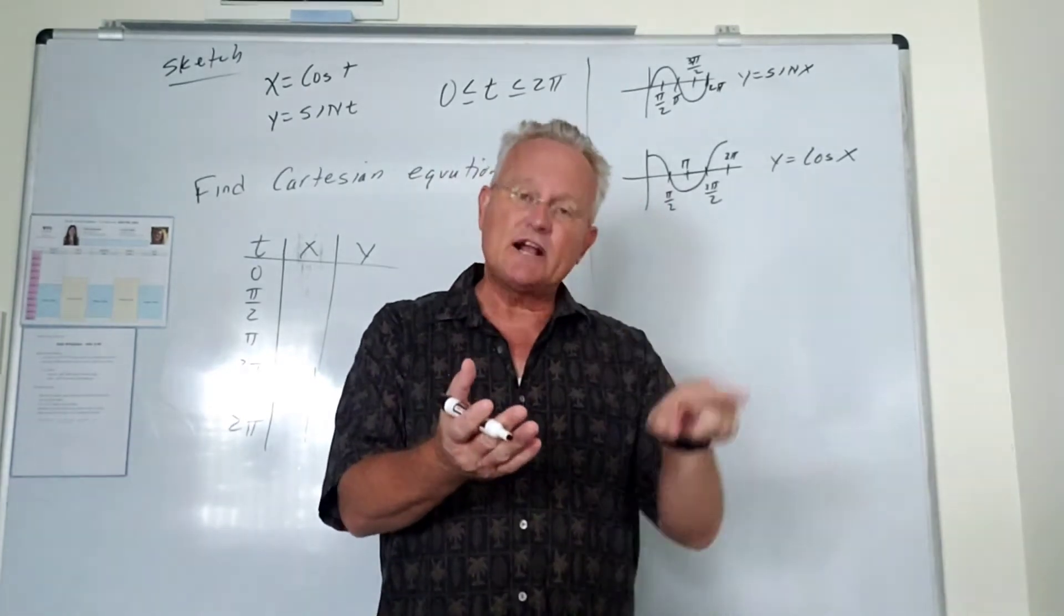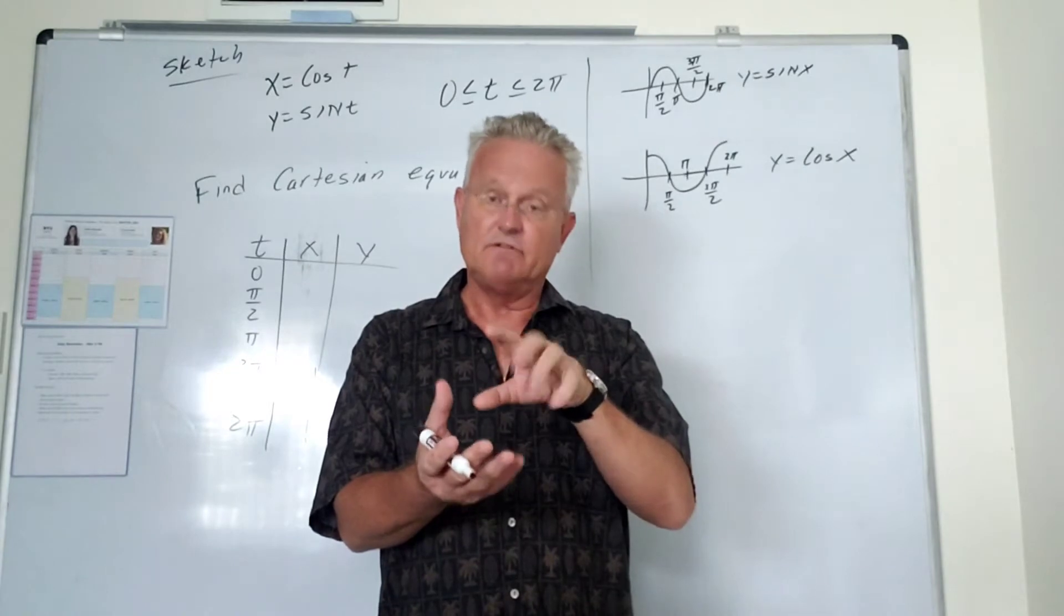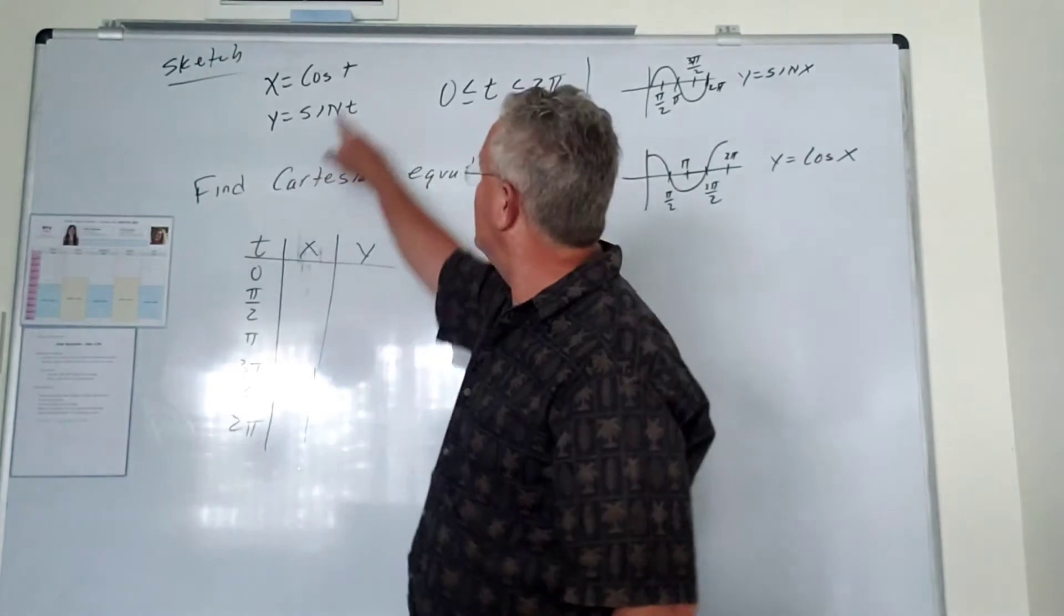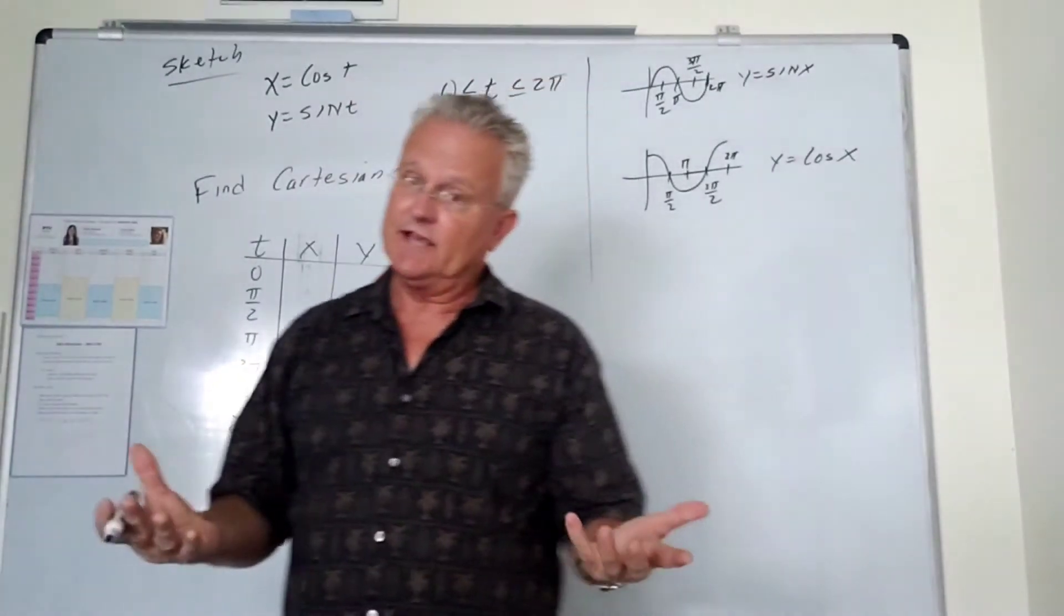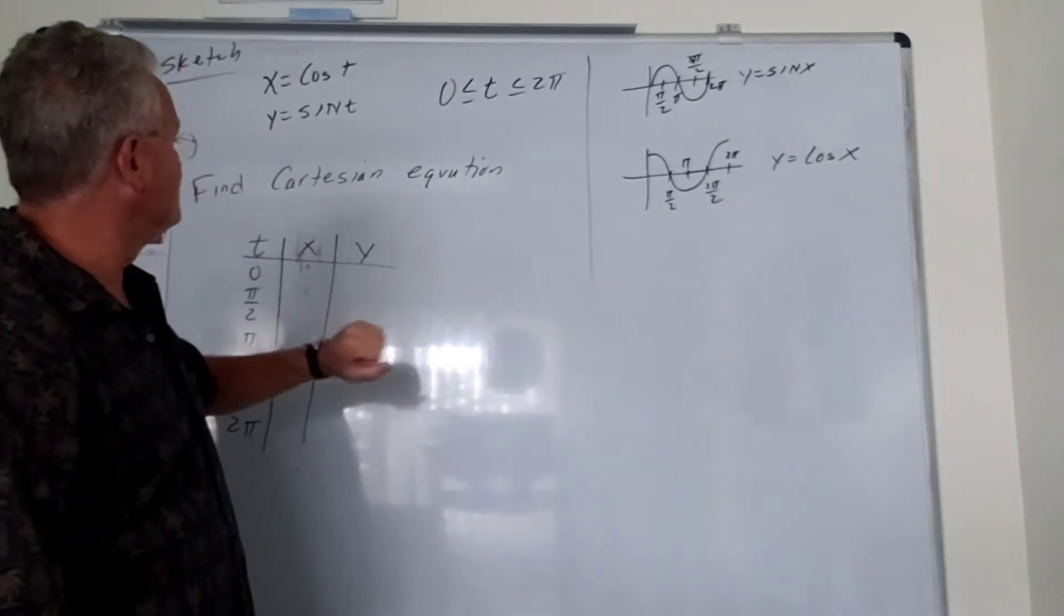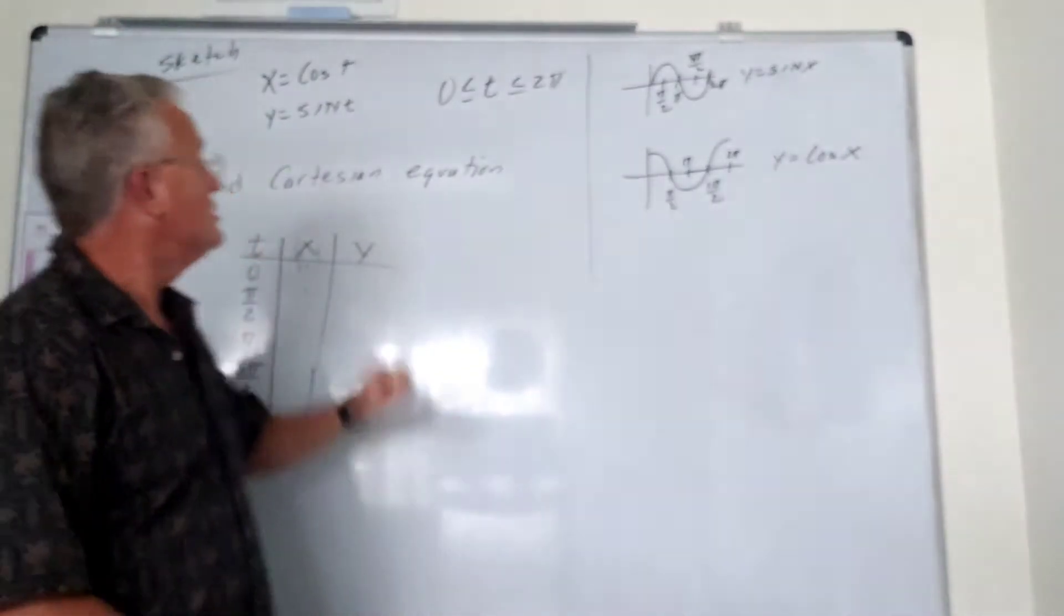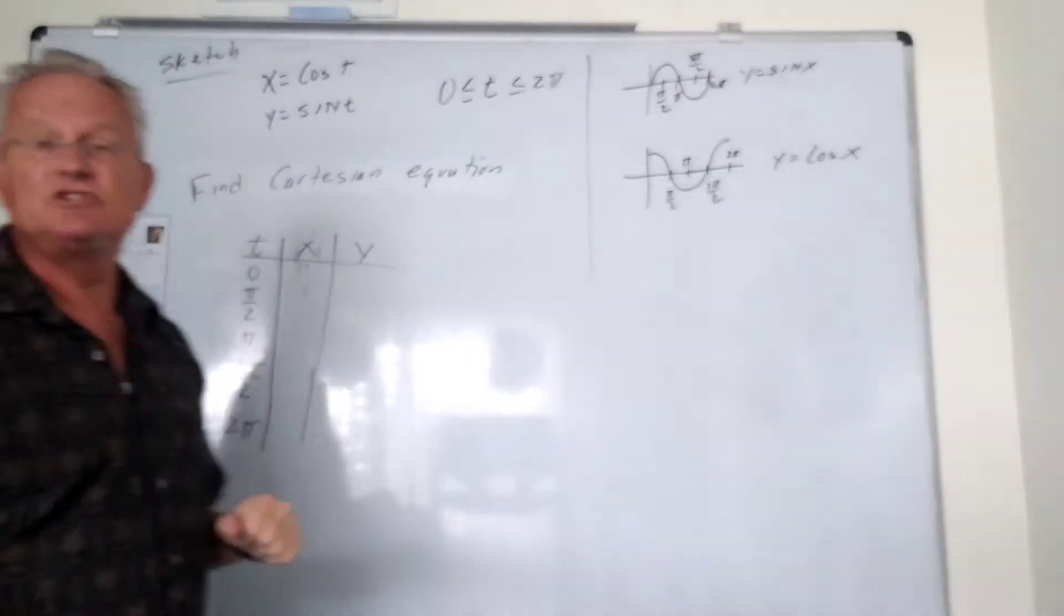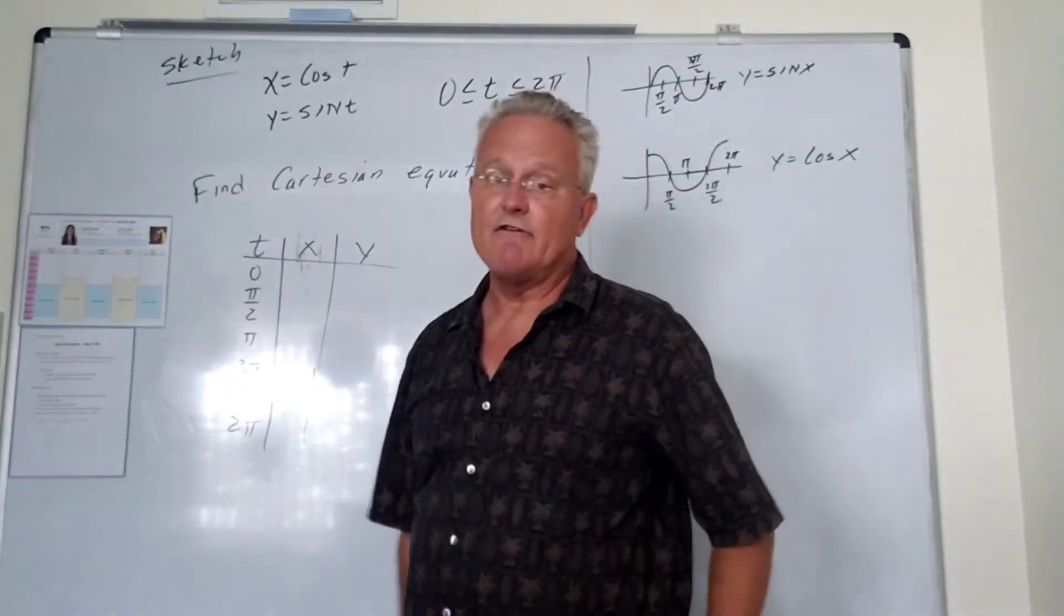but it gives you the direction in which the particle is traveling, and it can tell you where the particle is located at any point in time. That's one nice advantage of parametric equations as opposed to Cartesian. So once we graph this, we're then going to find the Cartesian equation that's equivalent to this graph.